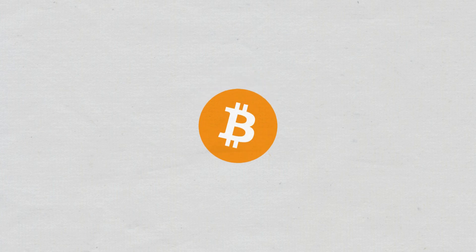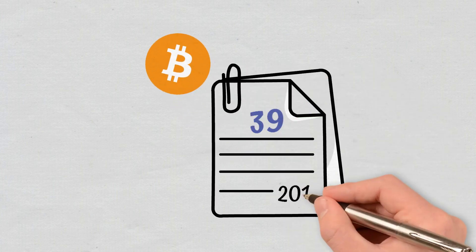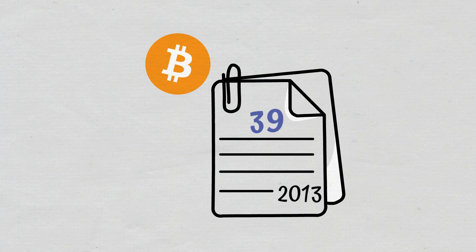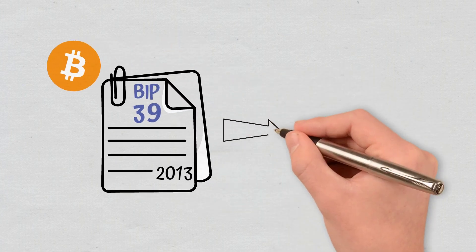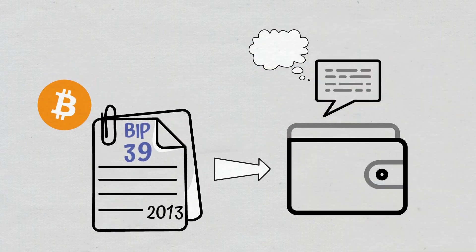This type of phrase was introduced with the Bitcoin Improvement Proposal 39 in 2013 and was widely adopted after that. The BIP 39 established a standard for deterministic wallets. In the case of such a wallet, a seed phrase controls all the private keys associated with it.